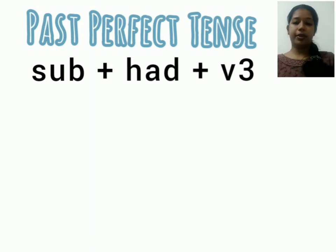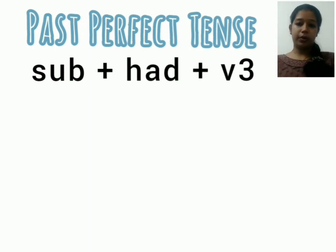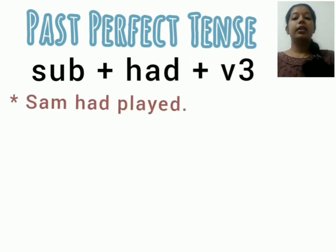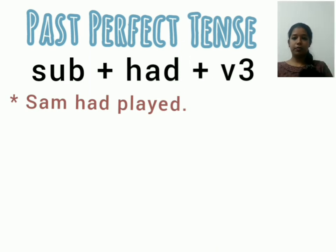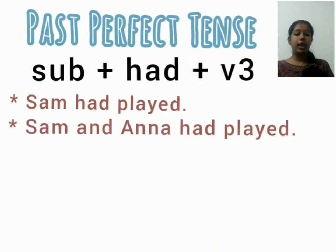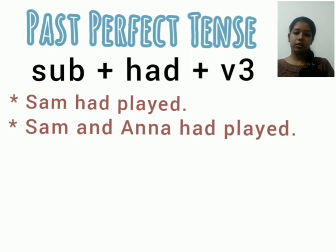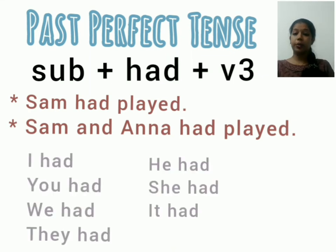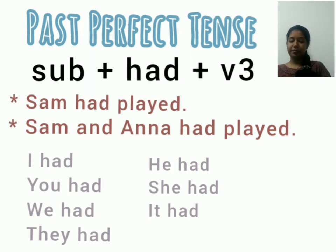In past perfect tense, we just need to write the third form — the past participle form — of the verb. The example will be: 'Sam had played' — that is a singular subject. For a plural subject, there is no change: 'Sam and Anna had played.' In both cases we use 'had.' In the pronoun chart: I had, you had, we had, they had, it had, he had, she had. There is no change for 'had' according to the number of subjects.